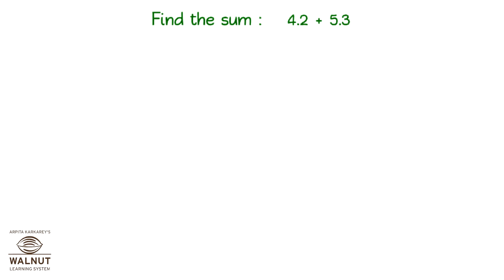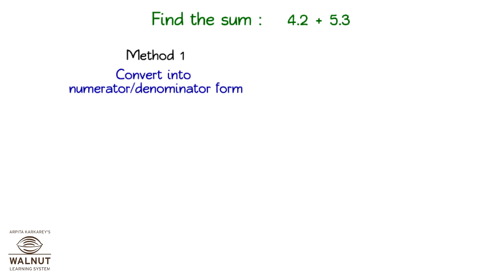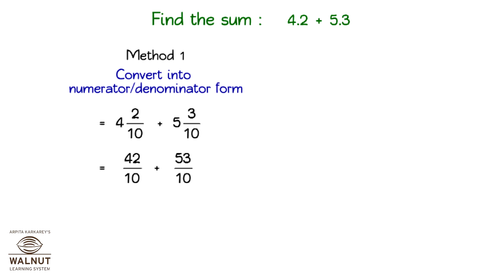Find the sum 4.2 plus 5.3. Method 1: Convert into numerator over denominator form. 4.2 is equal to 42 over 10, and 5.3 is equal to 53 over 10. So 42 over 10 plus 53 over 10 equals 95 over 10, which equals 9.5.